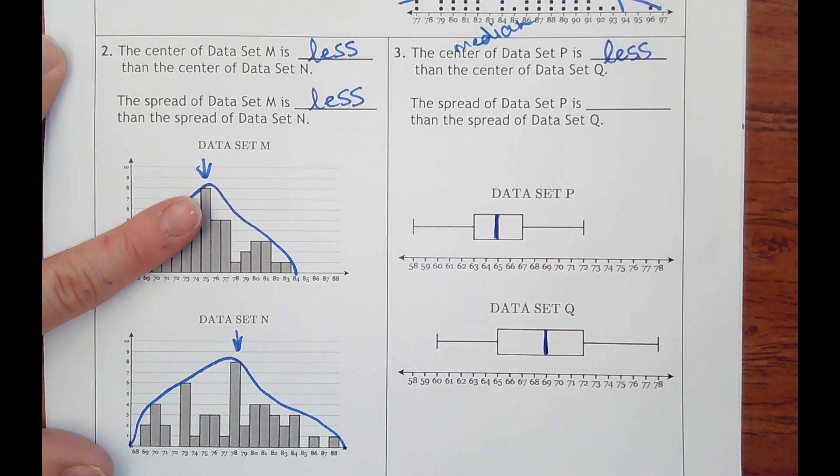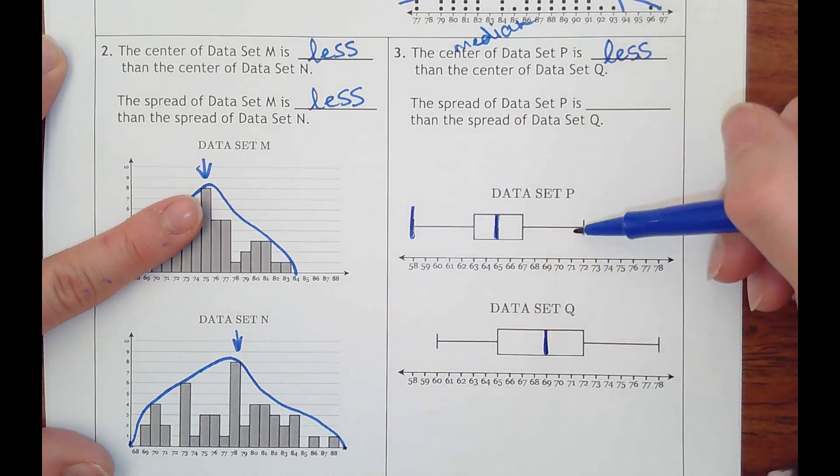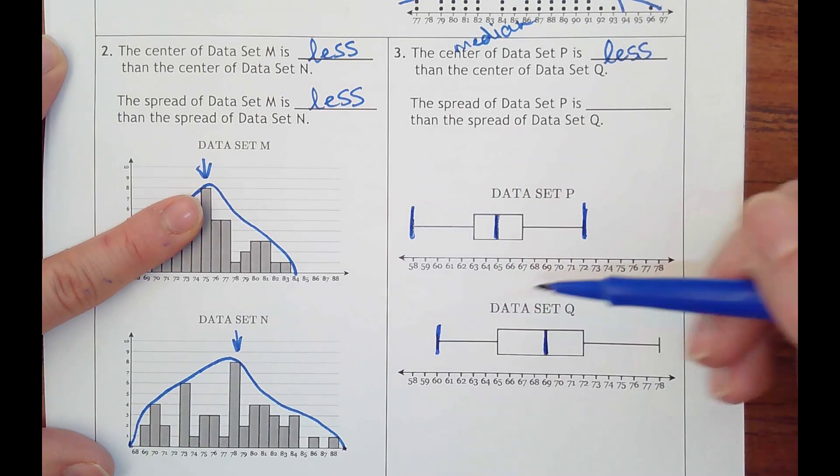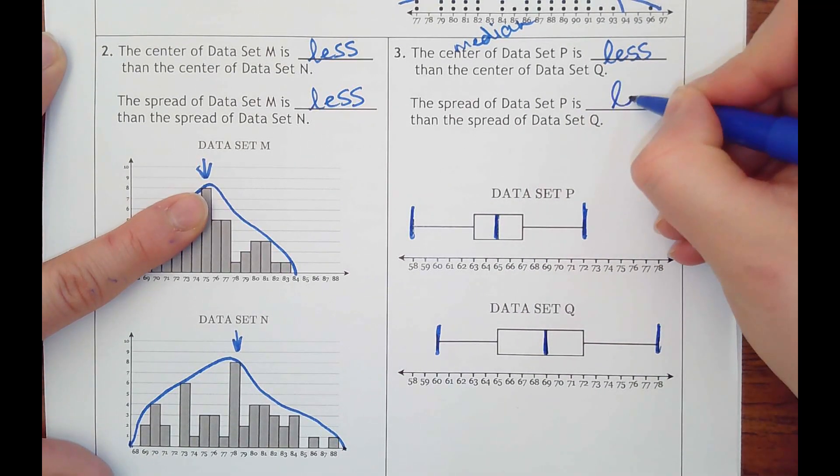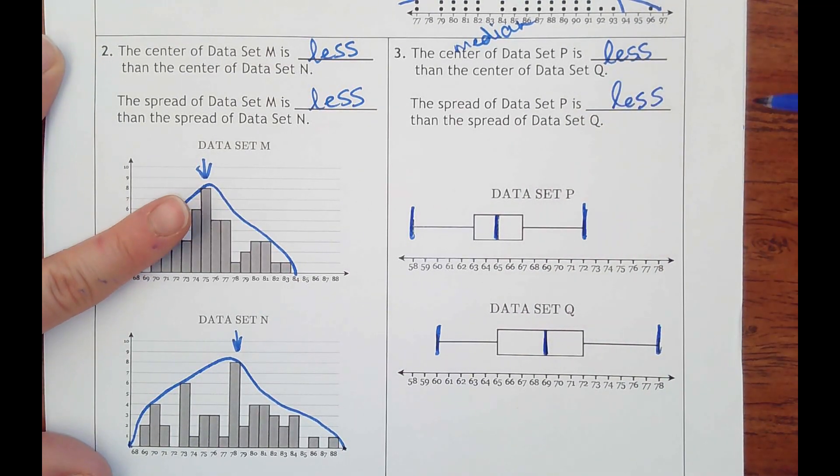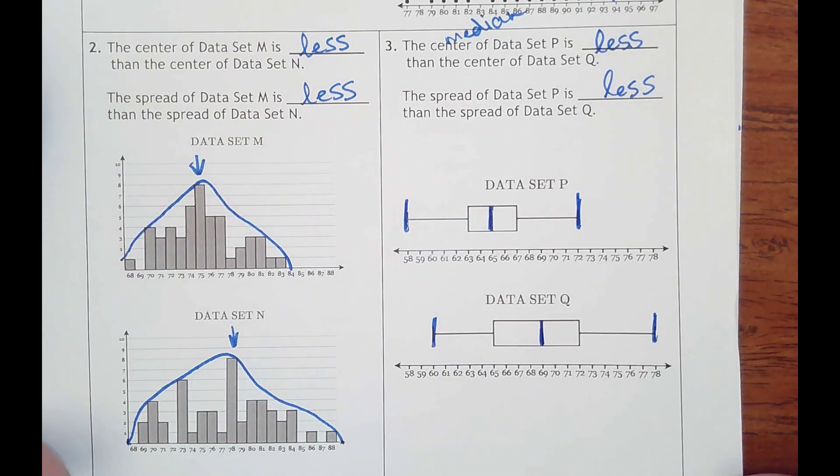And then the spread, you can see the whiskers goes from here to here. That is also less spread. I didn't mean to get all of them to be less than, sorry, less spread than data Q.